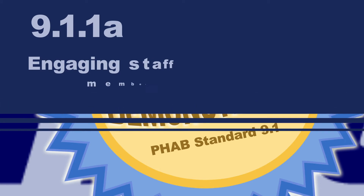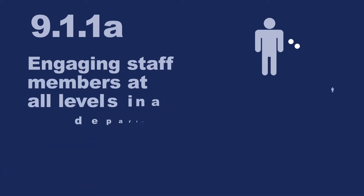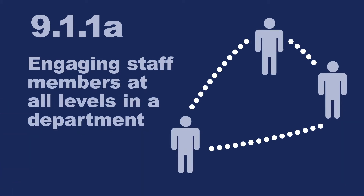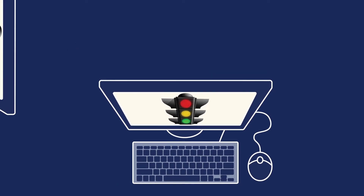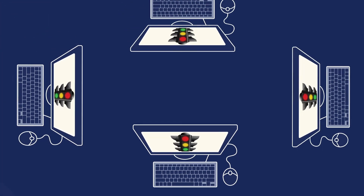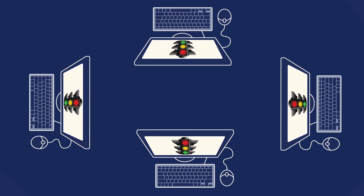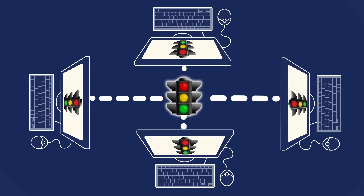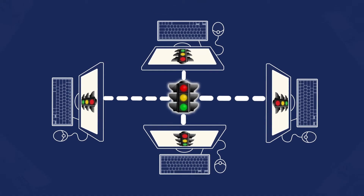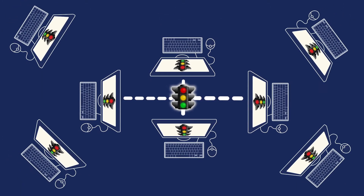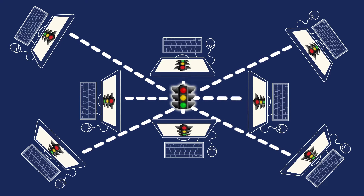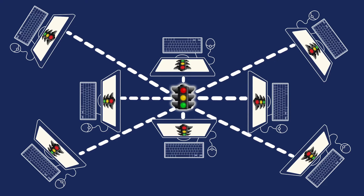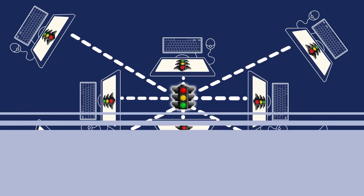Measure 9.1.1a talks specifically about engaging staff at all levels in your department with performance management. The Dashboard is a full multi-user system, giving everyone their own unique login. This allows you to easily engage your entire staff, including selected external partners, to distribute the opportunity to keep the plans and information up to date.